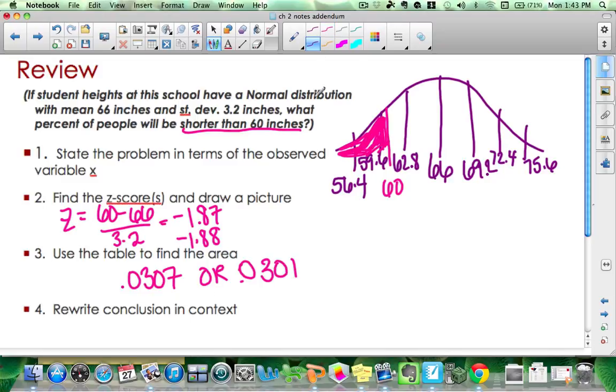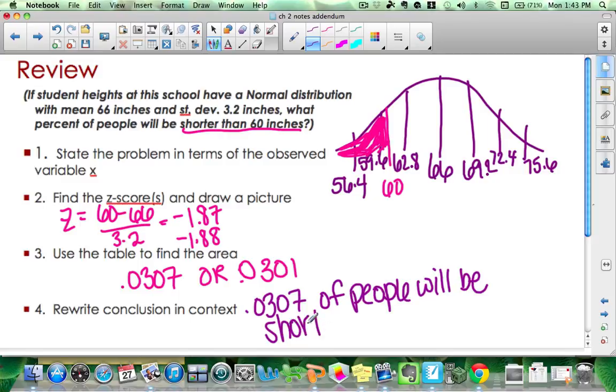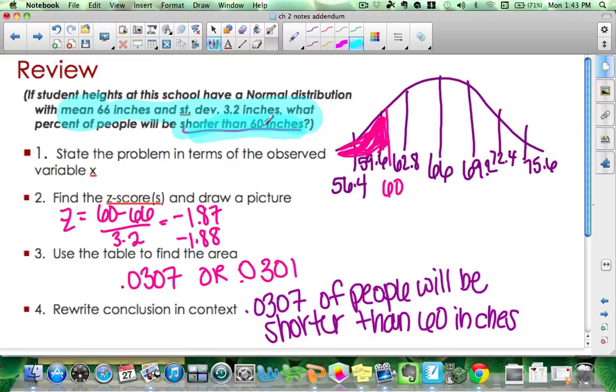And then I need to write my answer in context. So 0.0307 of people will be shorter than 60 inches. Now, this was clearly a forward z-score problem. We know it is because we're given shorter than 60 inches. We're given the number, and we want to know what percent.